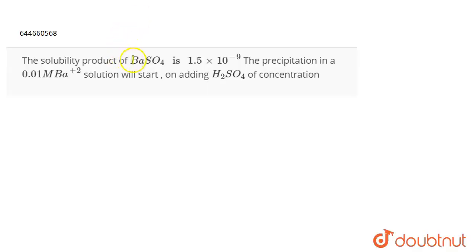The question is: the solubility product of BASO4 is 1.5 into 10 power minus 9. The precipitation in a 0.01 molar BA plus 2 solution will start on adding H2SO4 of concentration. So basically...